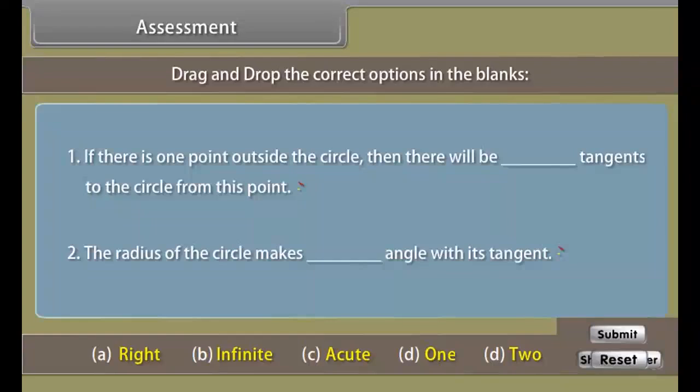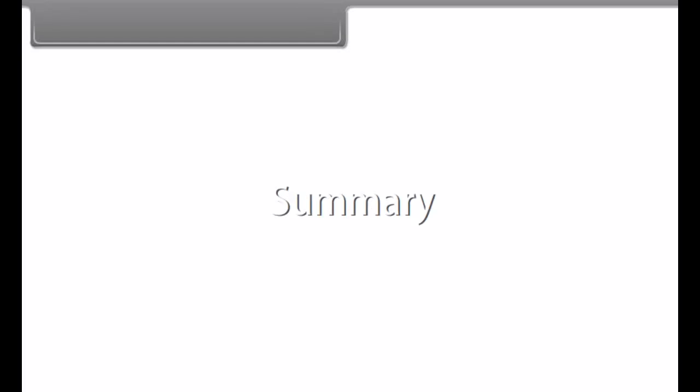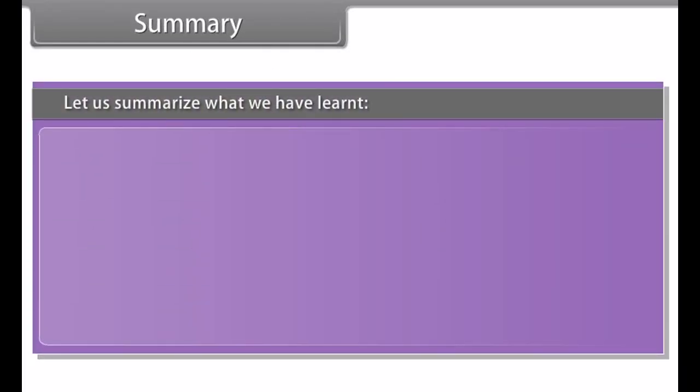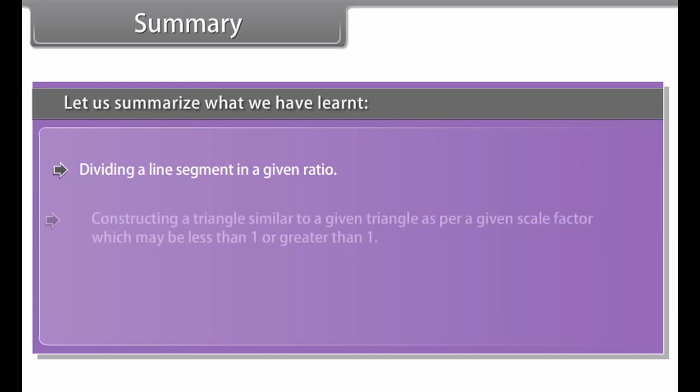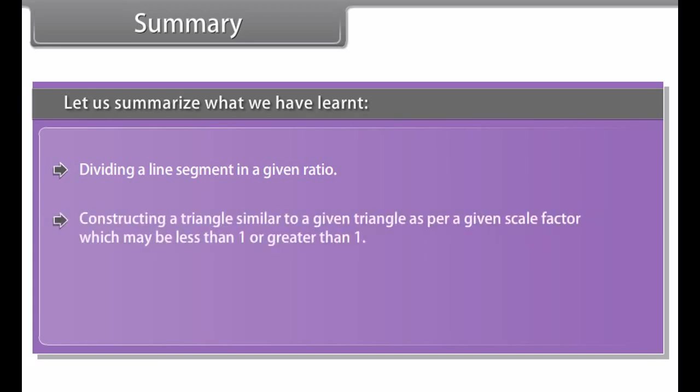Let us now check how this construction provides us the required tangents. Join OQ. We can now see that angle SQO is an angle in the semicircle and therefore angle SQO equals 90 degrees. Also, OQ is a radius of the given circle. Therefore, SQ has to be a tangent to the circle. Similarly, we can say that SR is also a tangent to the circle.